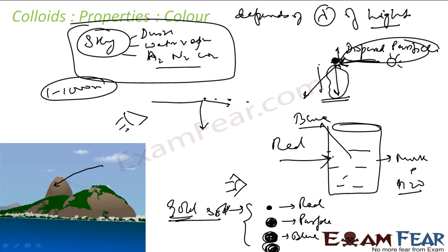Increasing the particle size further, the gold sol appears blue. Finally, when the particles are made very large, it appears golden. So for the same gold sol, in the range of about 50 to 60 nanometers it appears red; increasing size gives purple, then blue, then golden. This is because the wavelength of the scattered or reflected light depends on the size of the particles.